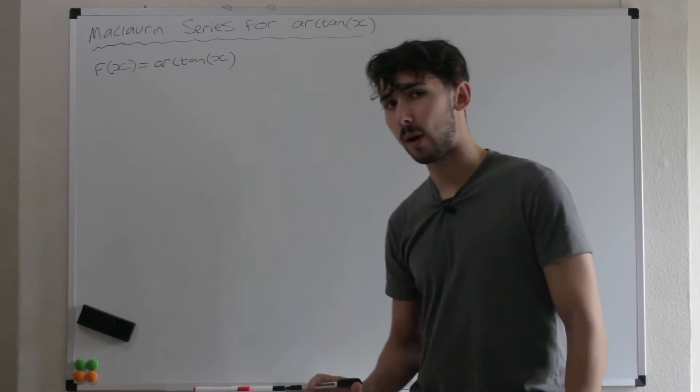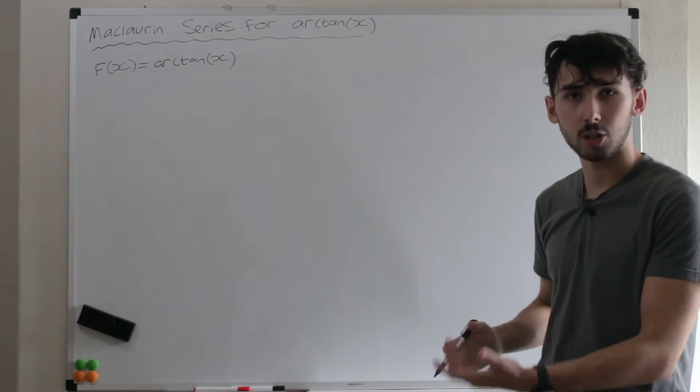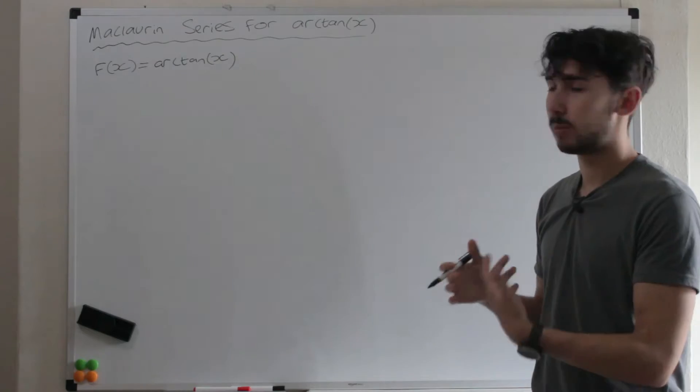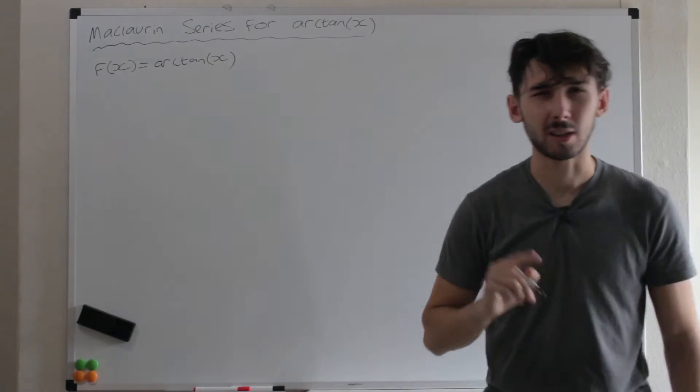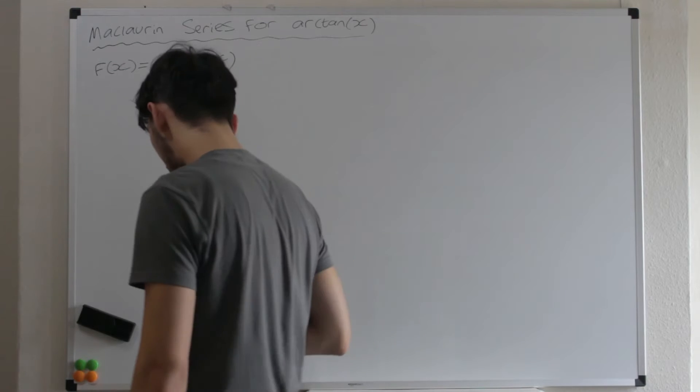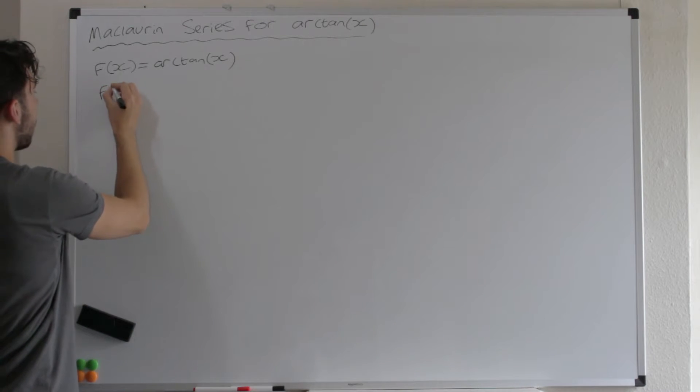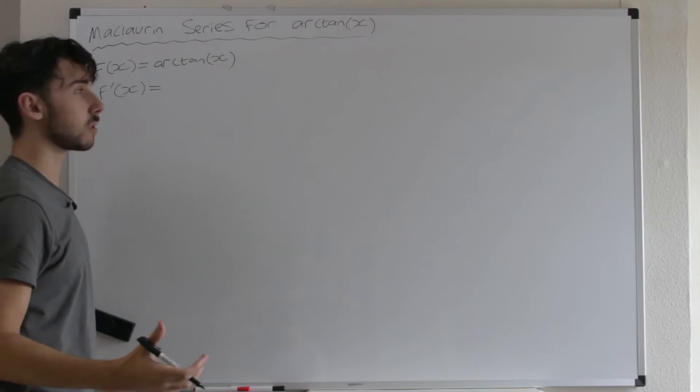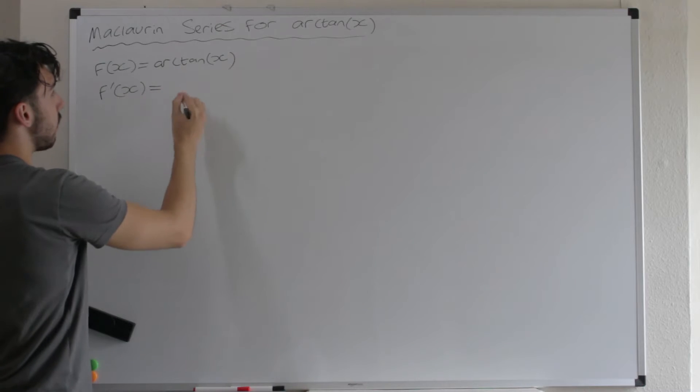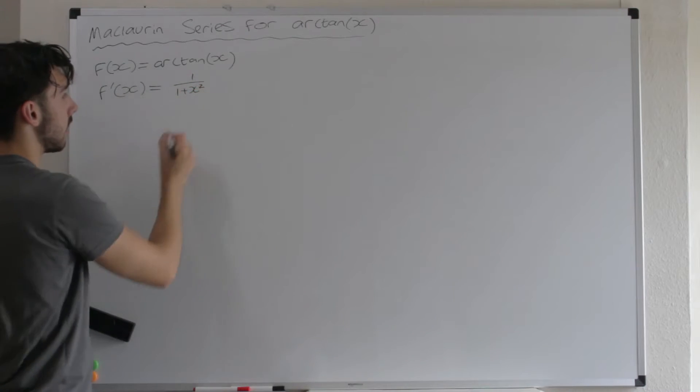This is not the typical way that you find the Maclaurin series because normally what do you do? You just differentiate, substitute zero, put it into the formula. But we're going to do something different for reasons that I'll explain just now. So the way that you would normally find this is you would just differentiate your arctan x, right? So the derivative of arctan x, well again, link is in the description for this one as well. The derivative of arctan x is 1 over 1 plus x squared.